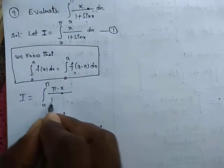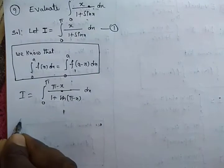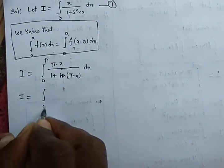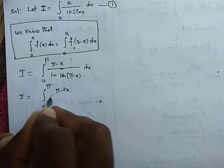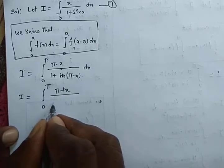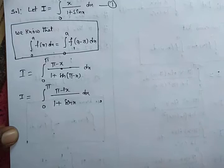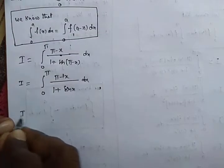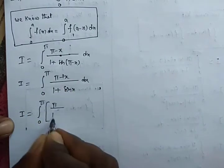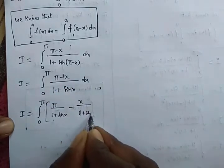So I equals the integral from 0 to π of (π minus x) divided by (1 plus sin(π minus x)) dx. Since sin(π minus x) equals sin x, this becomes the integral from 0 to π of (π minus x) divided by (1 plus sin x) dx.